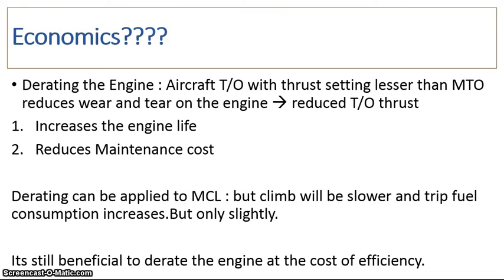Here the terminology of de-rating the engine comes in. De-rating means decreasing the rating — an aircraft can take off with a thrust setting lesser than the maximum takeoff thrust. This in turn reduces the wear and tear on the engine. This is achieved by increasing the engine life and reducing maintenance cost. Basically, the airline is saving a lot of money.